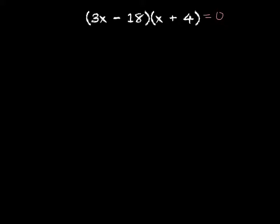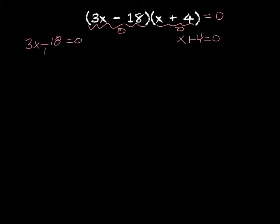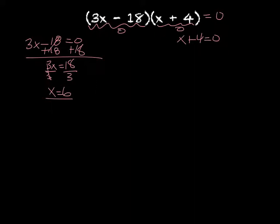Now we just solve. Setting each factor equal to zero: 3x − 18 = 0 gives 3x = 18, so x = 6. And x + 4 = 0 gives x = −4. Those are our two possible x values.